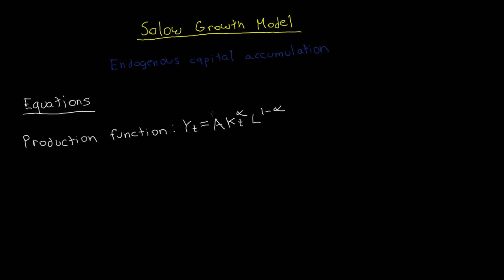The first exogenous variable you'll see is A, which represents total factor productivity — you can think of it as representing technology. Next, we have capital, which is endogenous, which should be no surprise because this model features endogenous capital accumulation. We also have labor supply, which in this particular version of the model I'm assuming is exogenous. Later on, we'll actually endogenize it by introducing population growth. And last, we have the parameter alpha, which I'll go into more detail about later on.